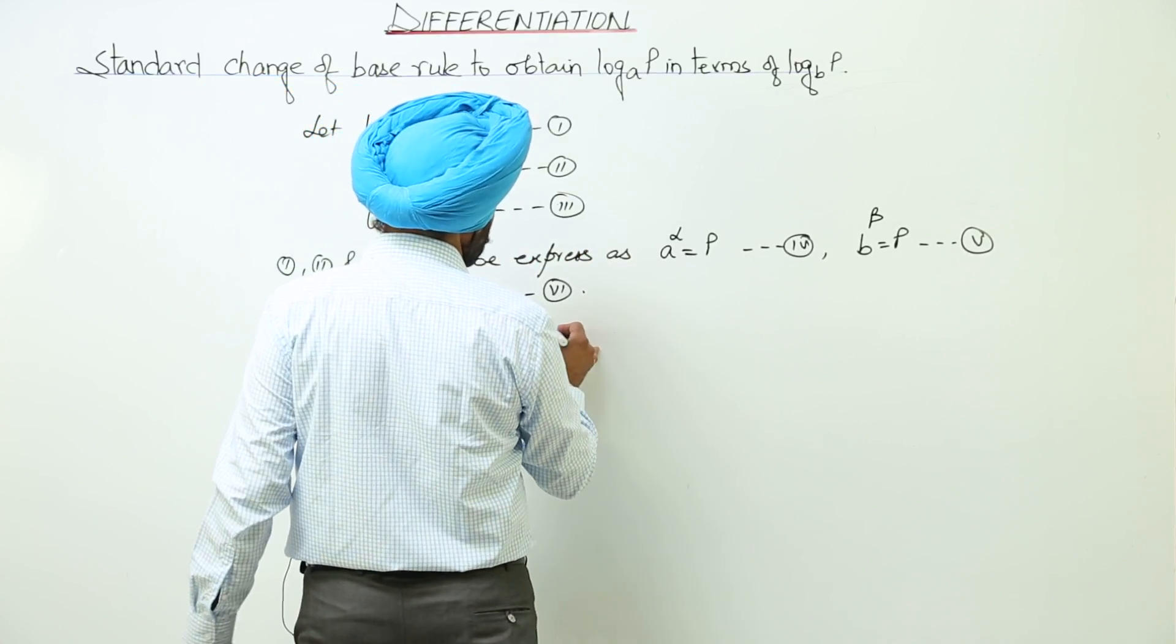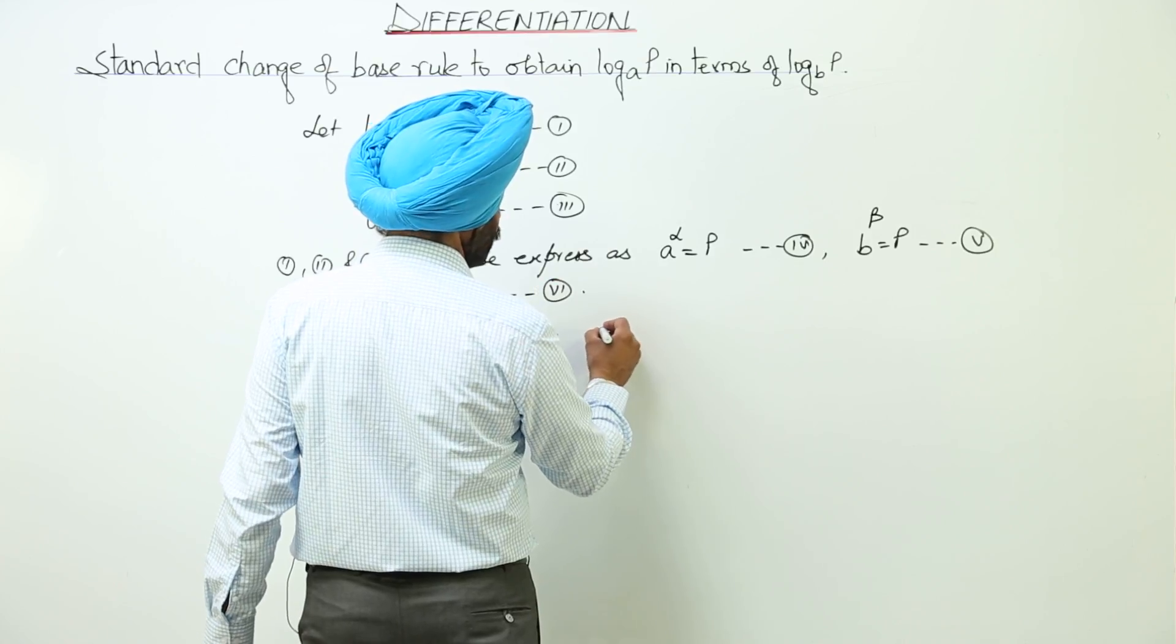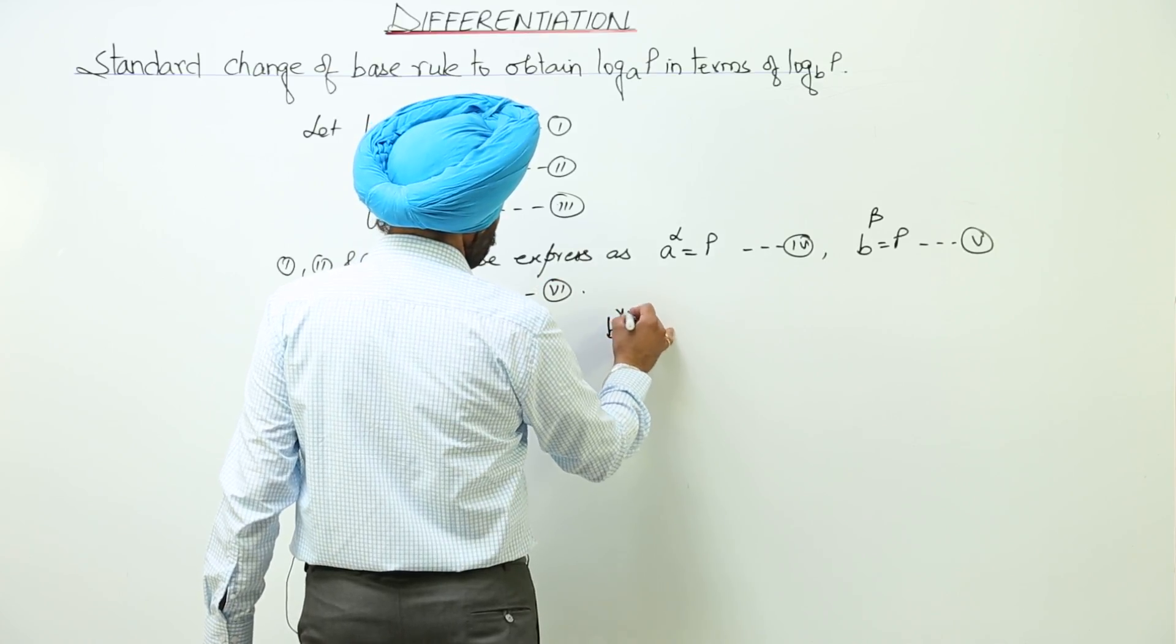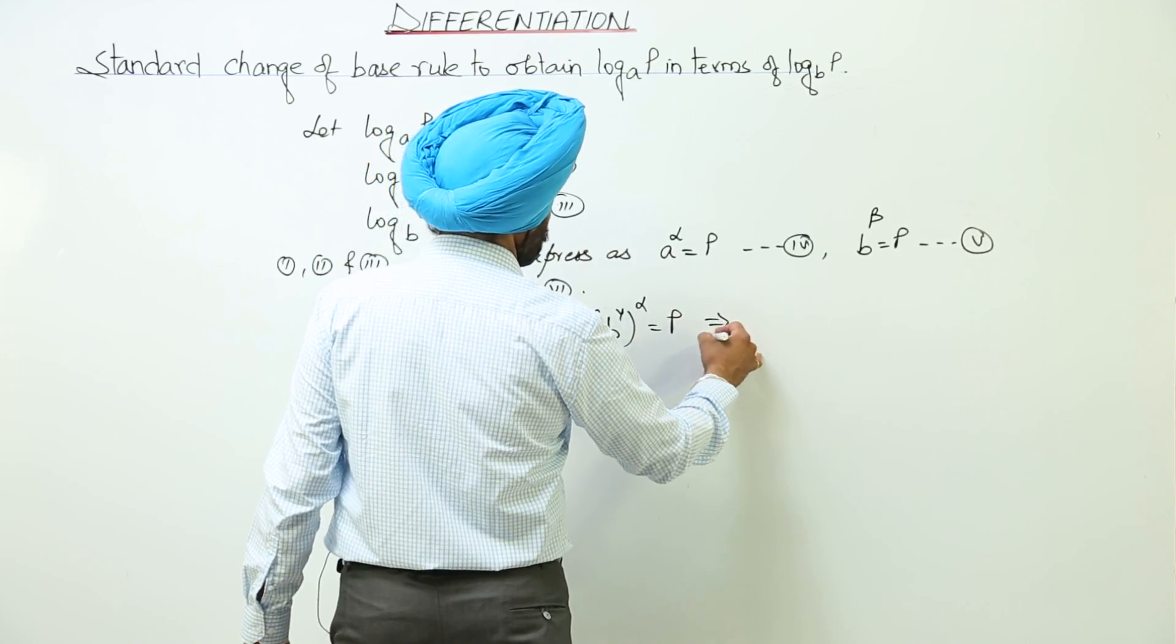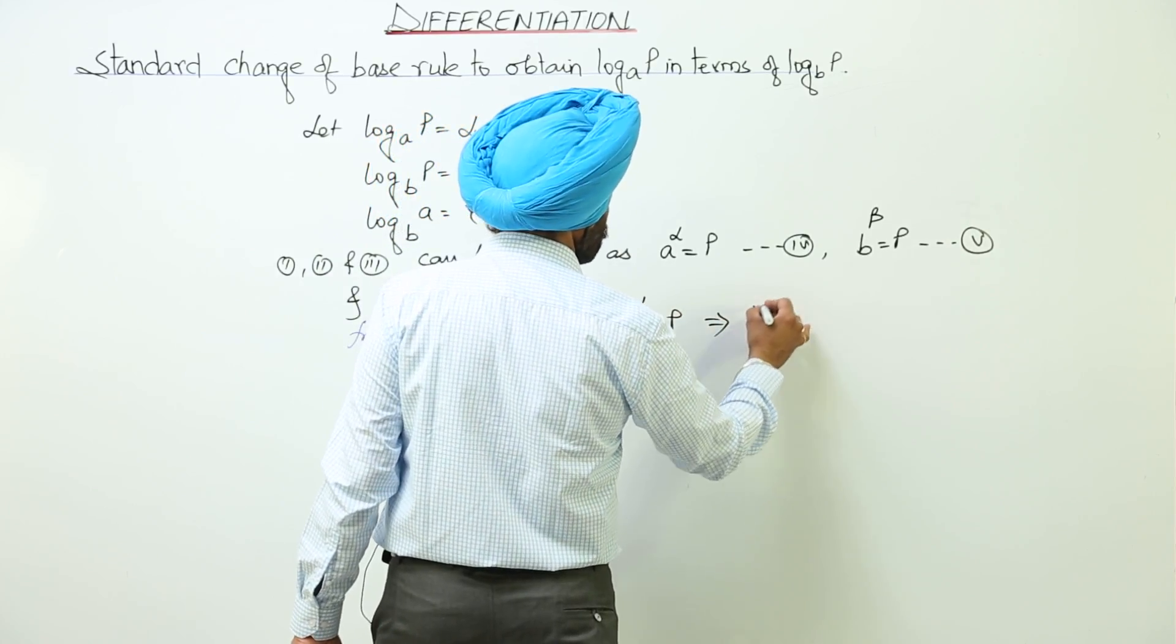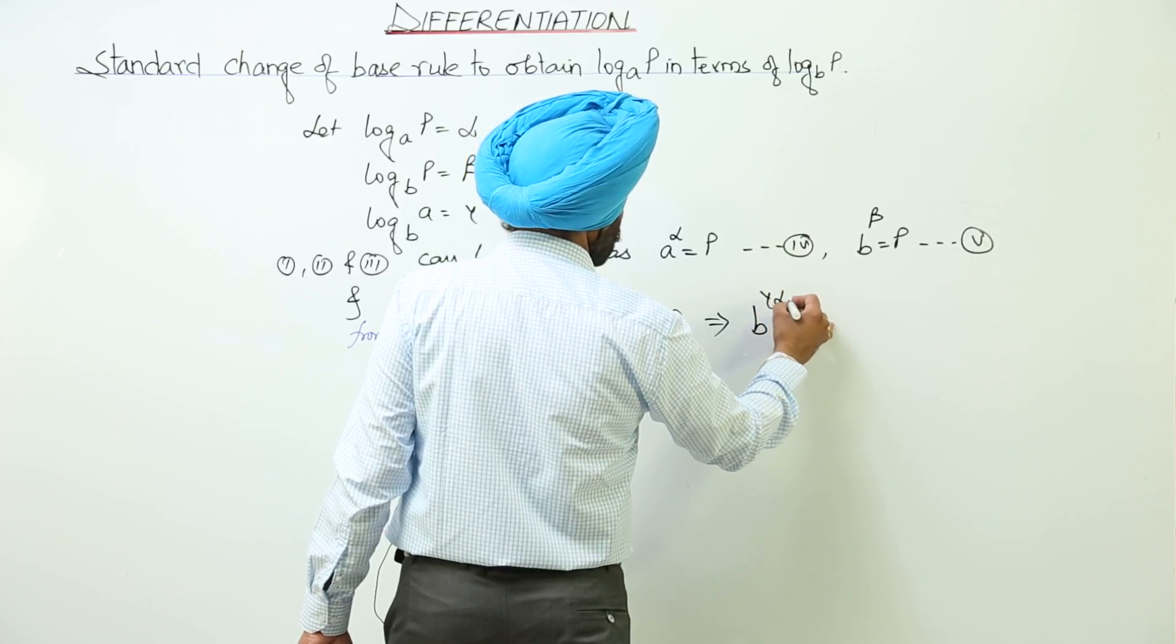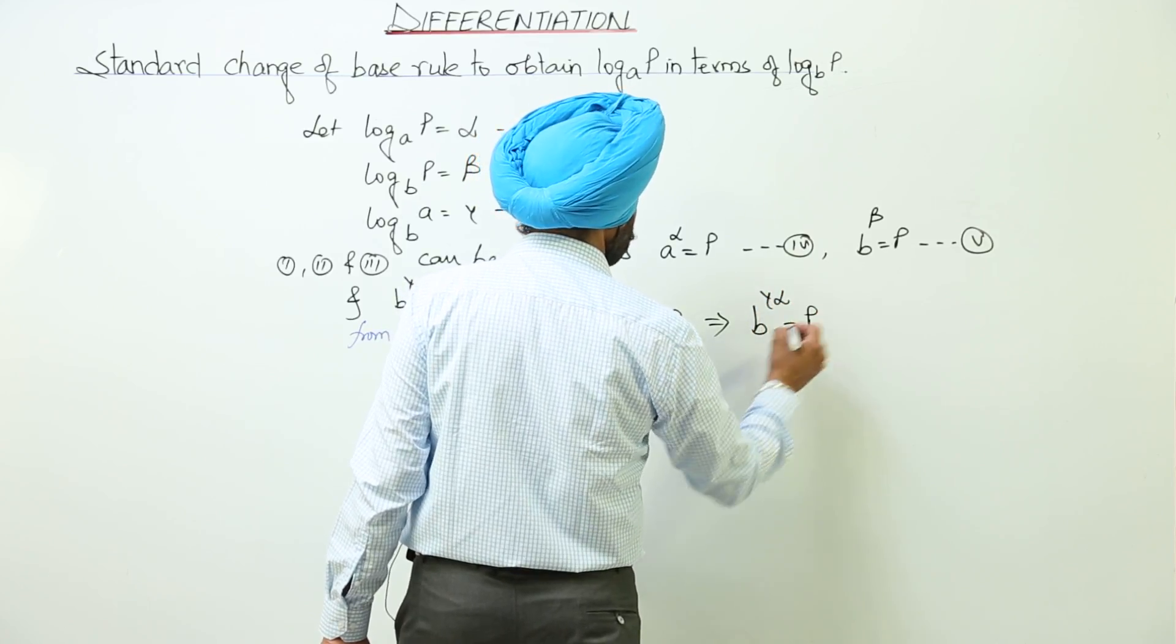So this becomes: a to the alpha equals p, or we can write it b to the gamma alpha equals p.